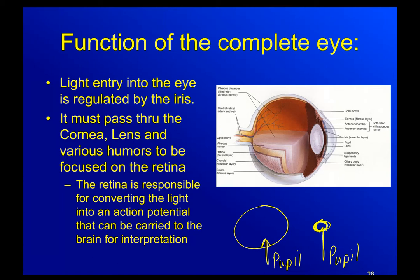Light has to pass through the cornea, then through the humors, then through the pupil before it can get back to the retina. The retina is responsible for converting light information into an action potential that can be carried to the brain for interpretation. That's why they're called photoreceptors — photo means light.